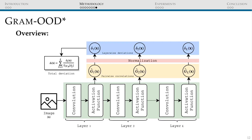An overview of the Gram-OOD star method is presented in this figure. Observe that only the activation layer is considered and a normalization block is included after the Gram matrix computation. The rest of the method is still the same as the original.